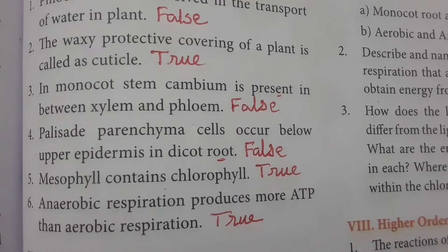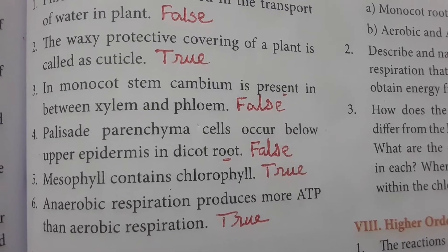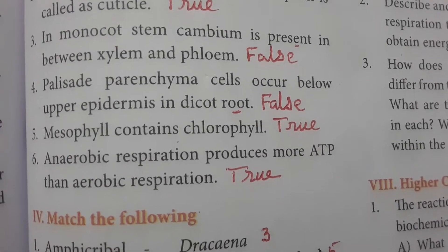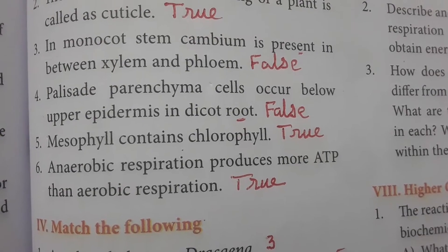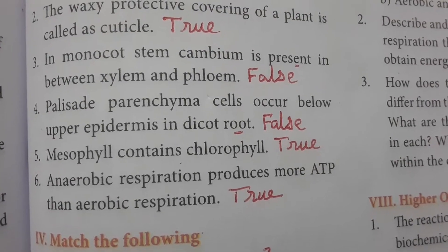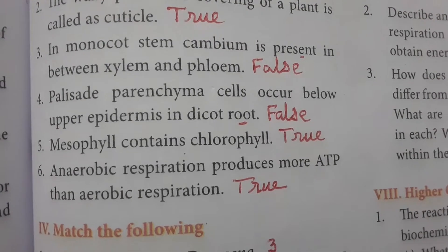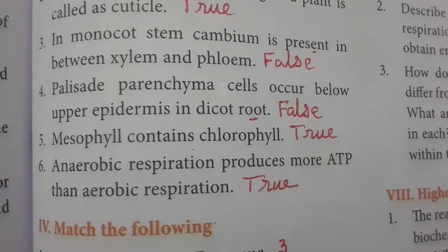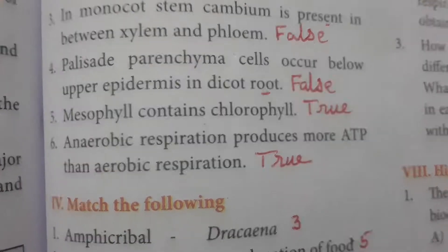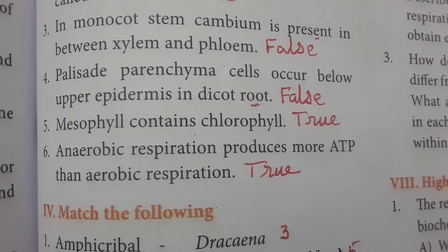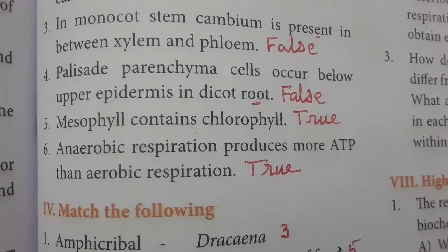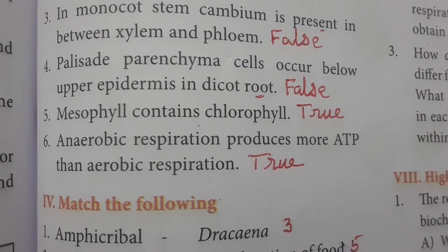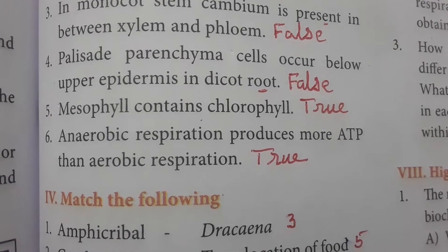In monocot stem, cambium is present in between xylem and phloem. Palisade parenchyma cells occur below the upper epidermis in dicot root — this is false; it is in the dicot stem. Mesophyll contains chlorophyll — true. Aerobic respiration produces more ATP than anaerobic respiration — true.